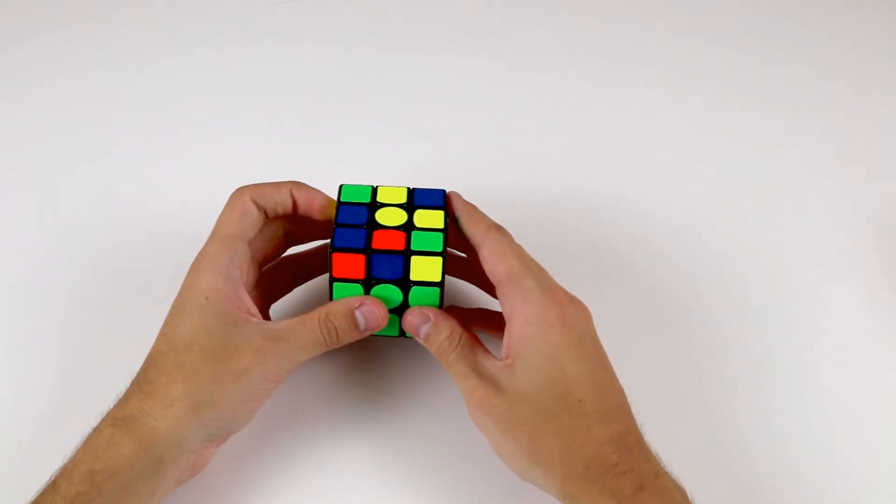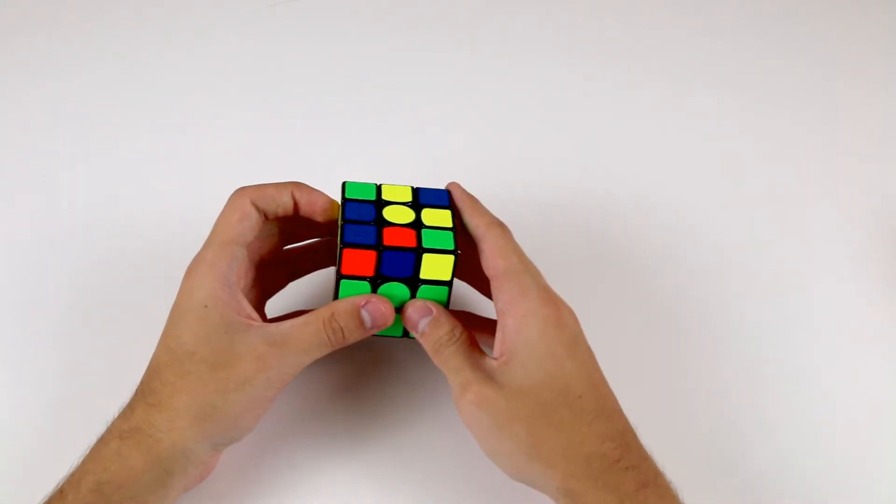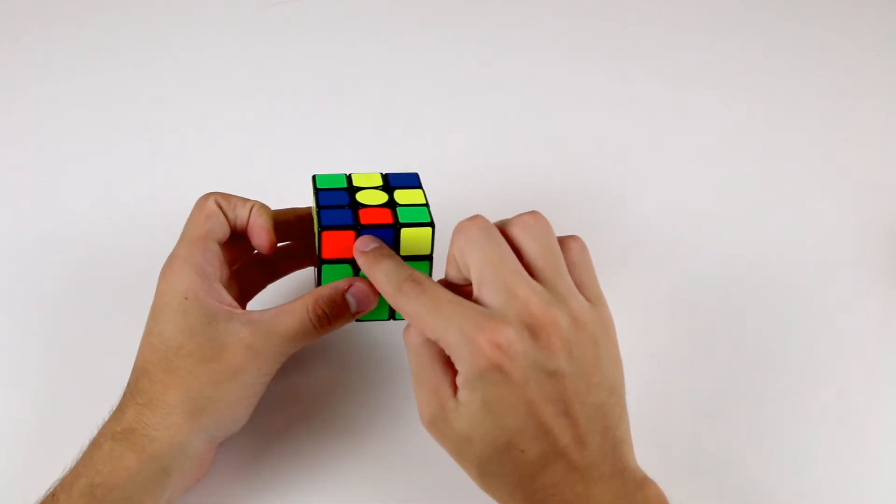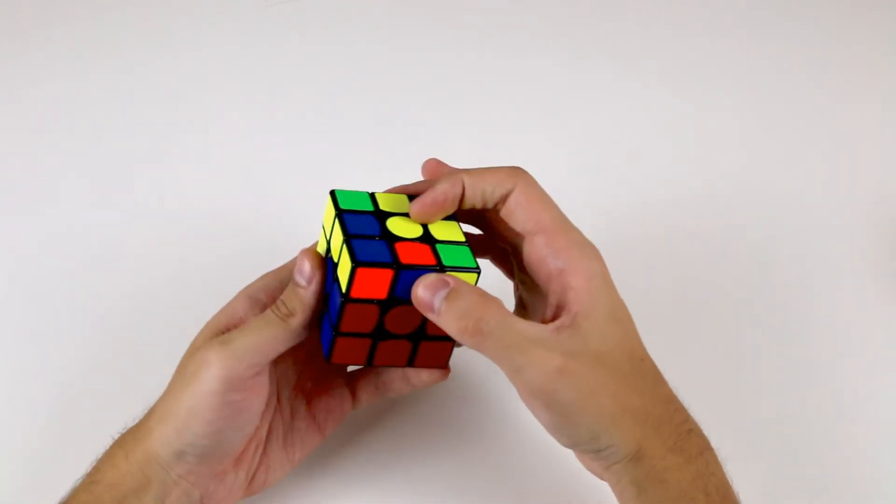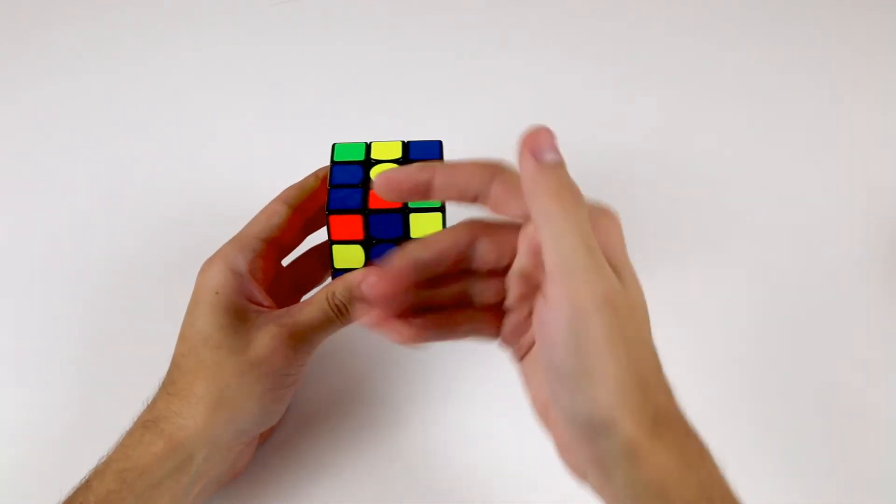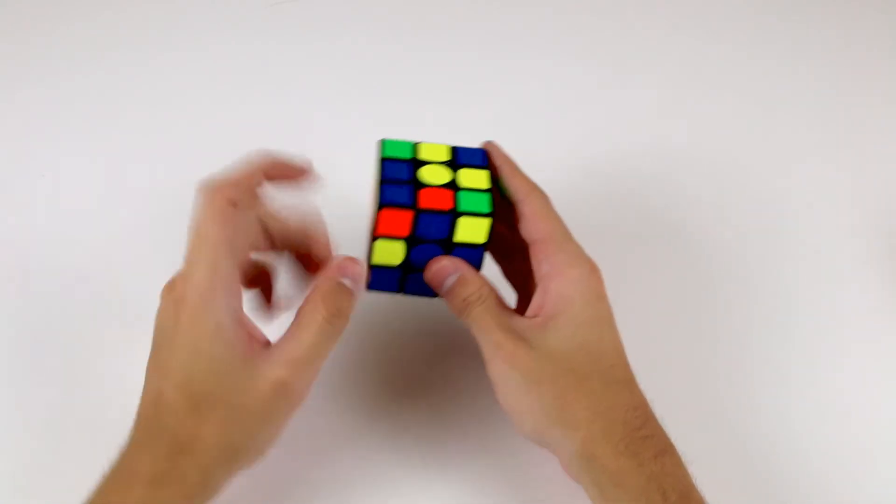Now we only have one more edge piece remaining, which is this orange and blue edge. So what we do is, remembering to match up this blue sticker with the blue center, like so, and hold the edge so it's in the front. And again, we have a case where it needs to go to the left, so we do the left algorithm.